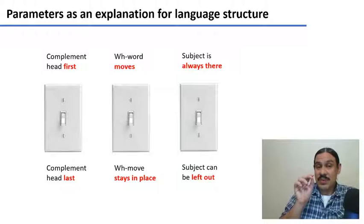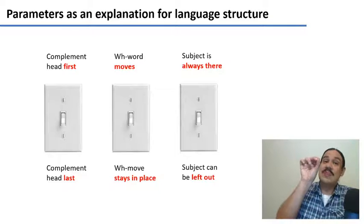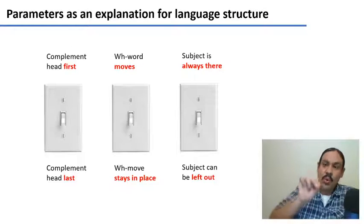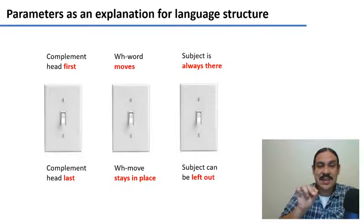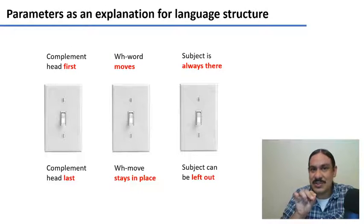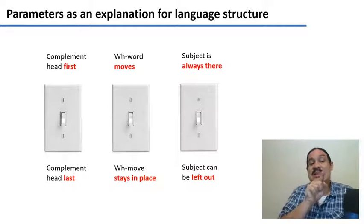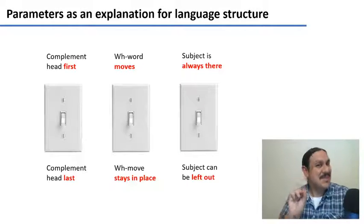The first one, movement, is going to decide whether your question words are going to move, for example, to the front of the sentence or whether they're going to remain in the same place as the answer for the question. For example, 'you eat what?' 'you eat pizza', which is how Japanese works.